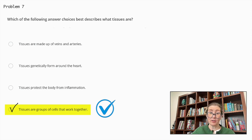Why are the other answers not correct? From the top, because veins and arteries are specific structures within the circulatory system and not general groups of cells forming tissues. Next, it's because tissues can form in any part of the body, not just around the heart. And last, because while some tissues like immune tissues can be involved in the response to inflammation, not all tissues serve this function. So tissues are groups of cells that work together is indeed the correct answer here.